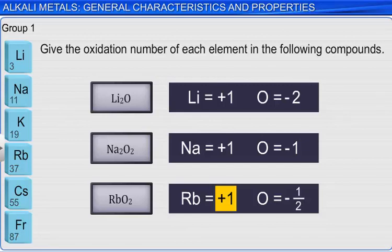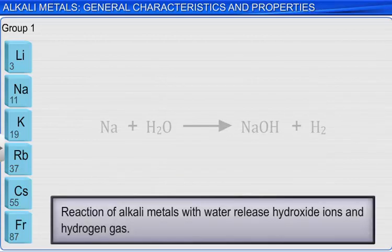As was mentioned earlier in this module, the alkali metals all react with water. These reactions release hydroxide ions and hydrogen gas, as shown in the equation here. The reactions become increasingly more explosive down the column.